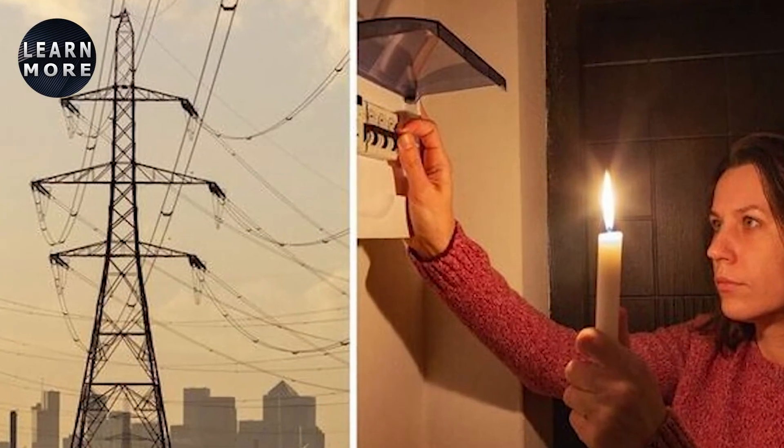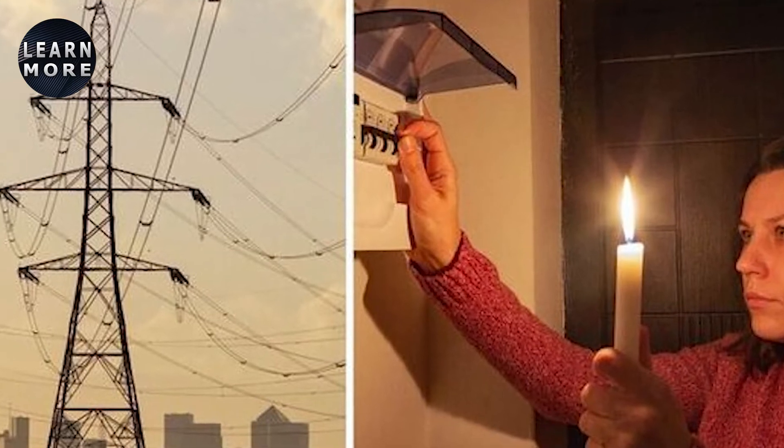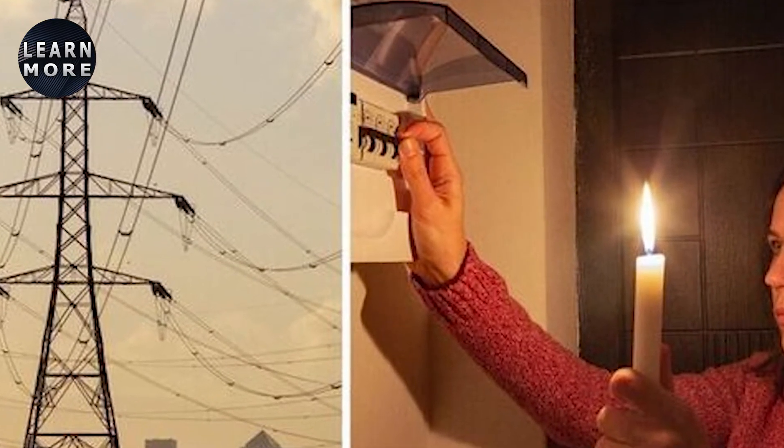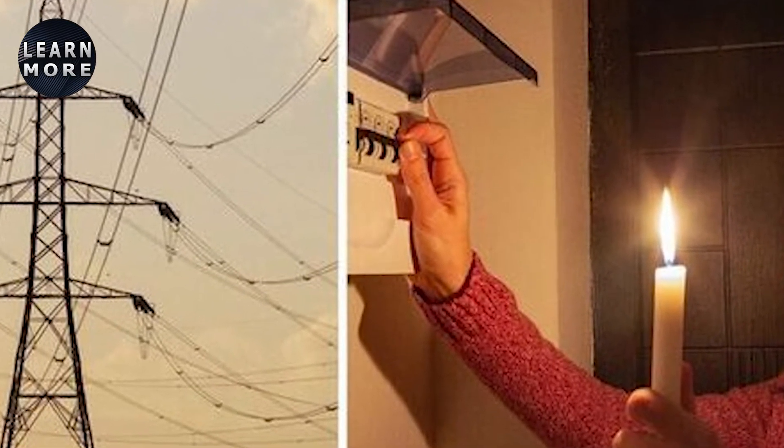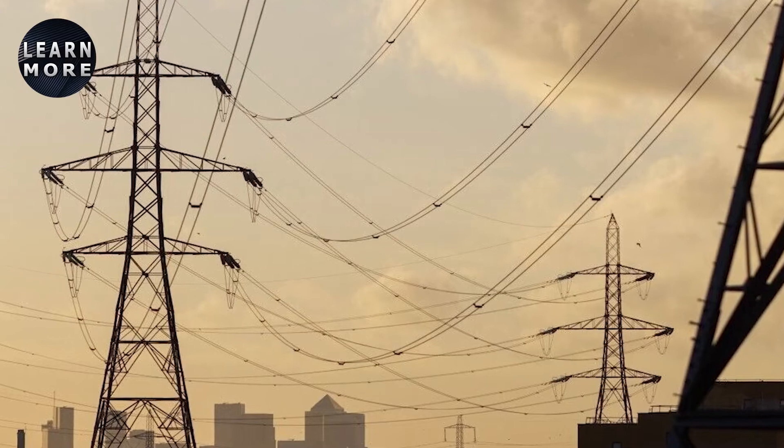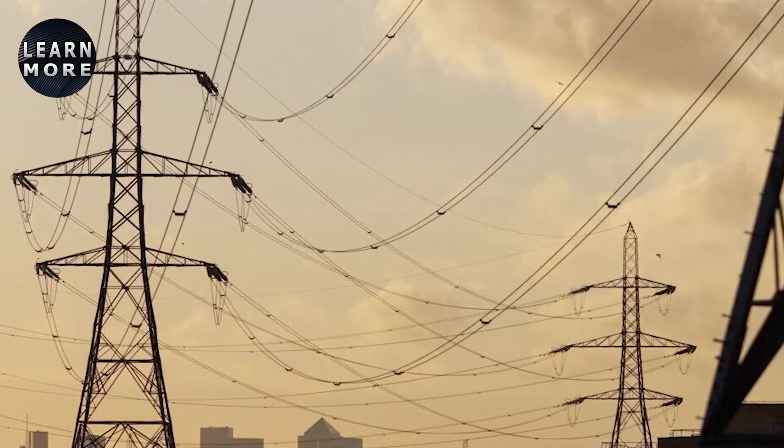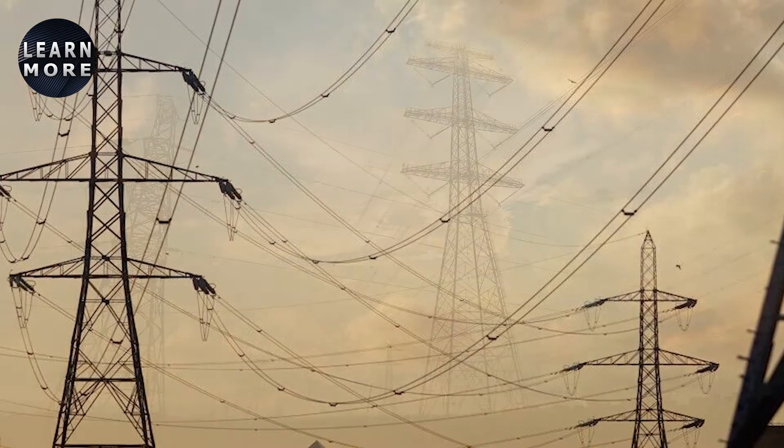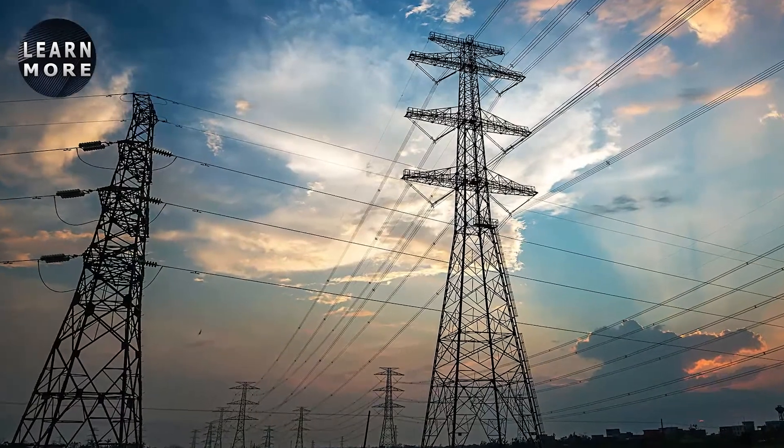According to the National Grid ESO, households could reduce their power consumption by choosing to run power-hungry appliances such as washing machines, clothes dryers, dishwashers, electric showers, and immersion heaters before or after the event. Another option would be to reduce energy usage, for example using a microwave instead of the oven, during the event window.